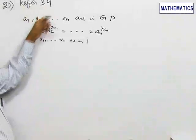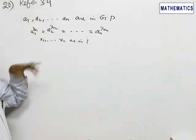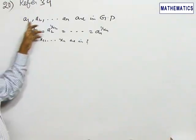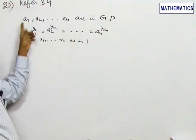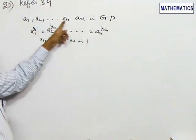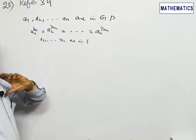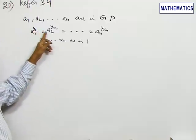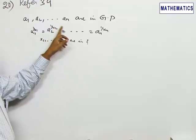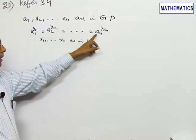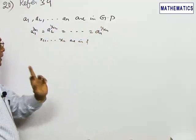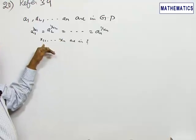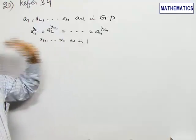Refer to problem 39 in your script. n numbers a₁, a₂, ..., aₙ are said to be in GP. Also given is a₁^(1/x₁) = a₂^(1/x₂) = ... = aₙ^(1/xₙ). We have to identify the nature of the sequence x₁, x₂, ..., xₙ.